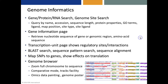The software can map SNPs to genes and show the effects on translation. There's a genome browser that lets the user zoom from the full chromosome to the sequence. It also has a comparative mode and a tracks facility. One can paint omics data onto the genome, as well as generate a genome poster.